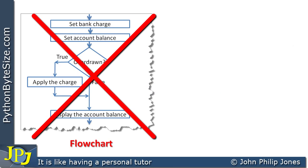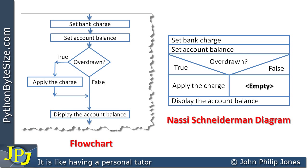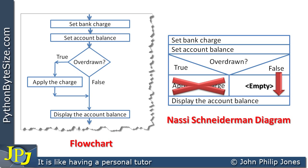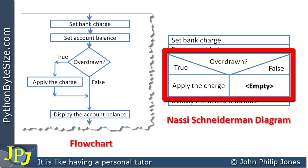It's not ideal to design with flowcharts, so here's another way of representing a design — a Nassi-Snyderman chart for the selection construct. We set the bank charge, then set the balance — those are a sequence. Then we ask: are you overdrawn? If true, we apply the charge, then display the account balance. If false, we skip the charge step — that step is not executed — and go directly to display the account balance. This area of the diagram represents selection.